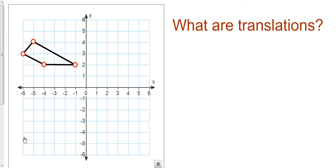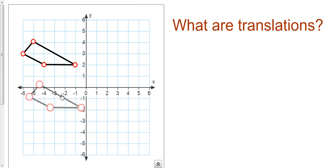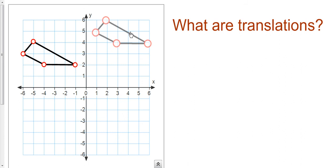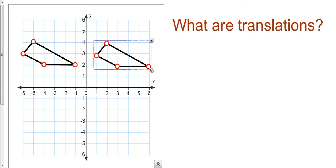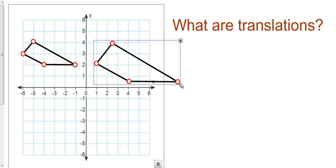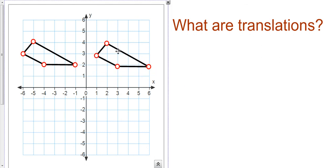Hey, welcome to the video on translations. So what are translations? Essentially, a translation is simply the movement of a 2D object in a plane where we don't change the orientation of the shape. So I could move the shape down, I could move the shape to the right, I could move the shape up, but you notice that I'm not actually changing the orientation. I'm not changing the shape at all, I'm not stretching it out, and I'm also not rotating the shape in any way.